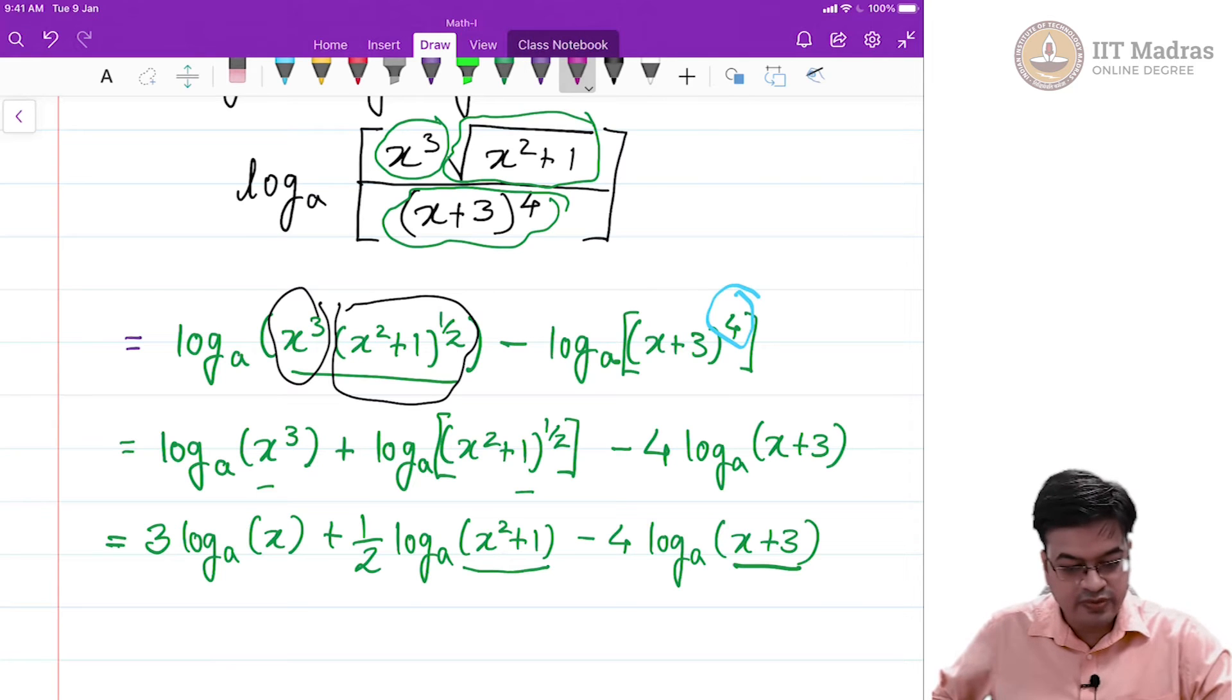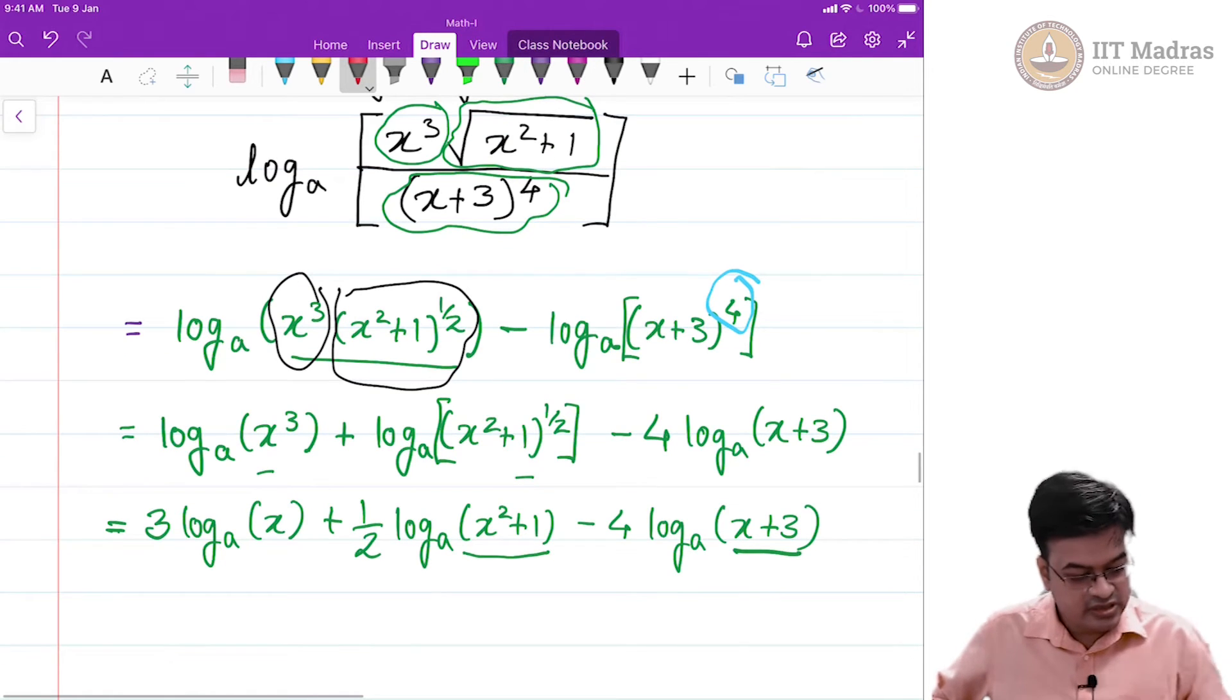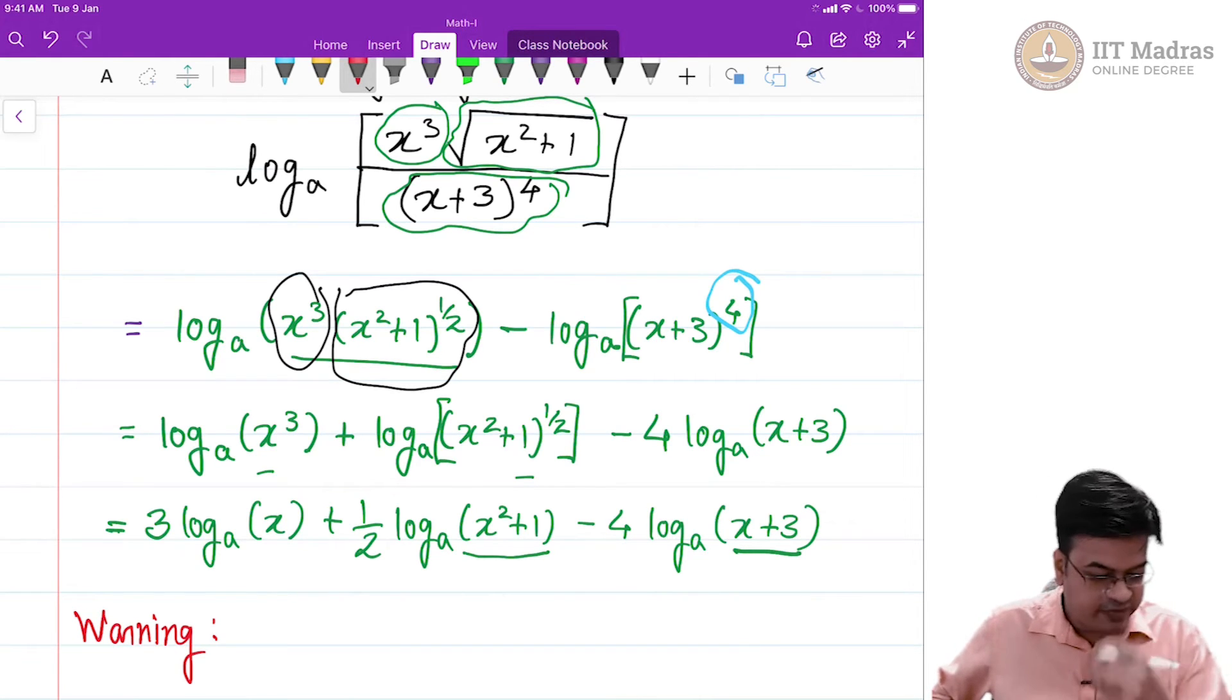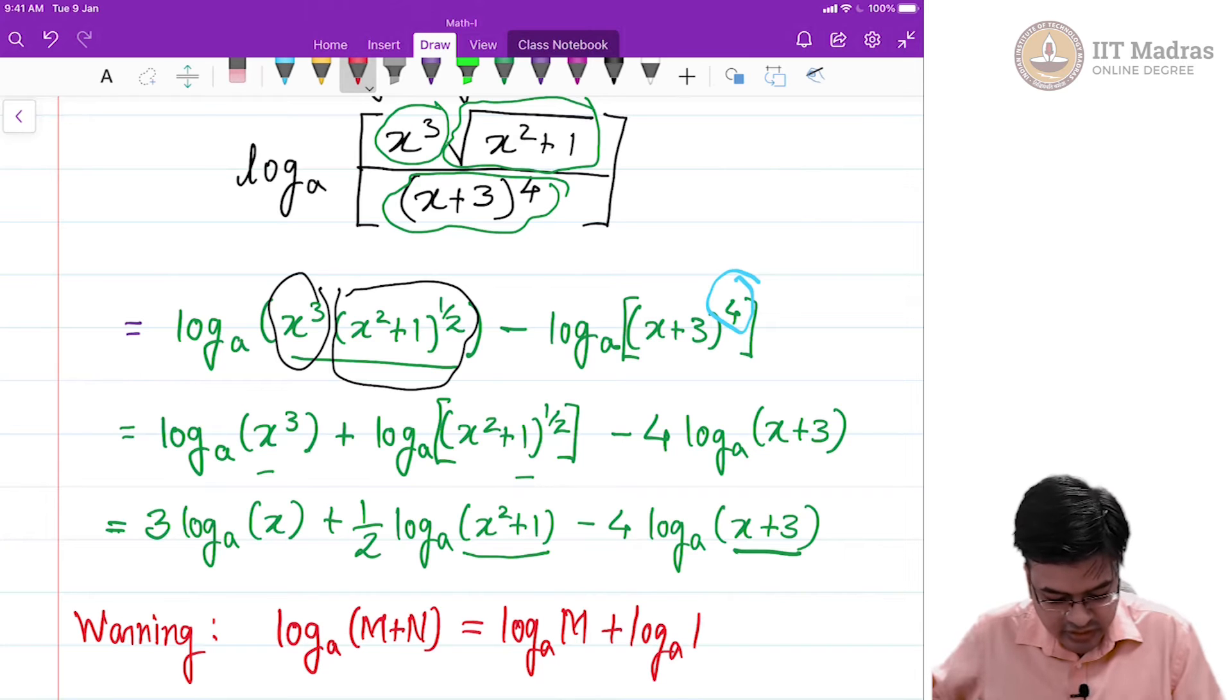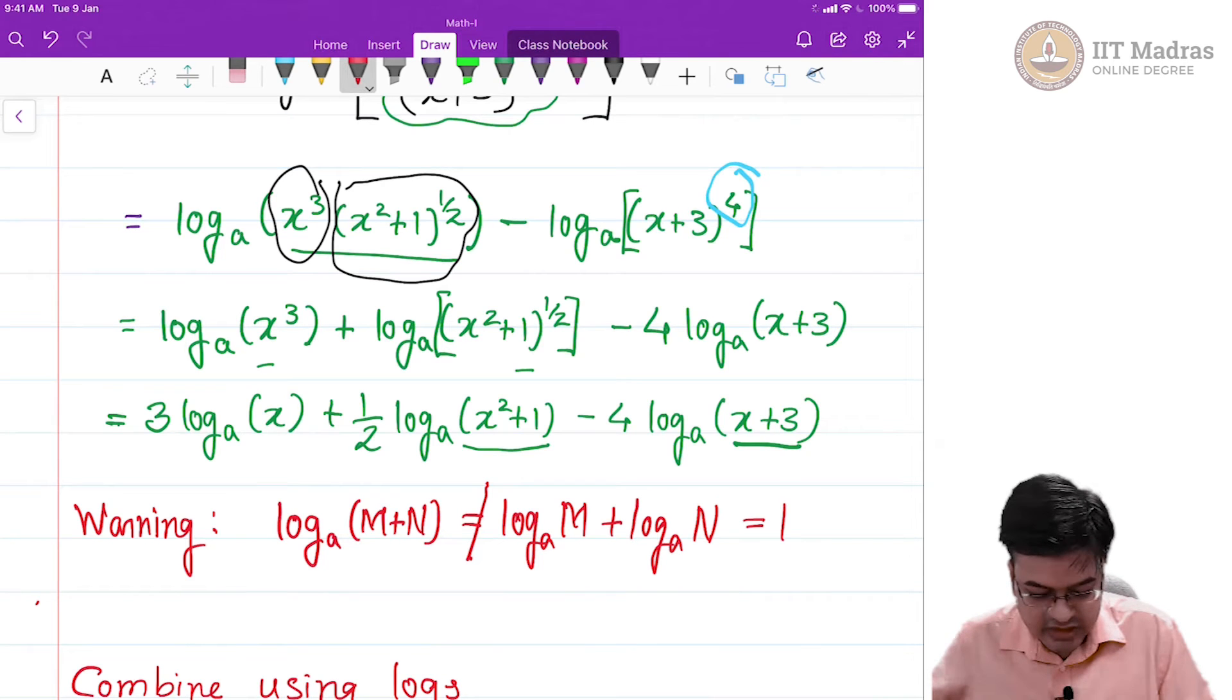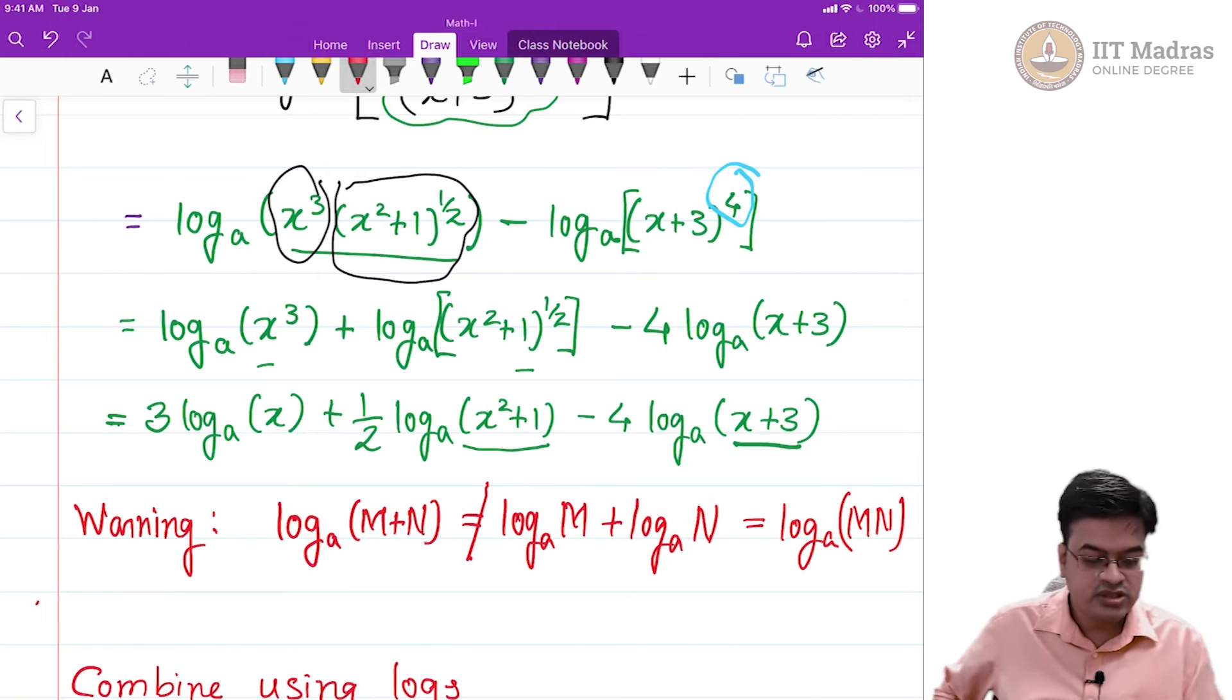Right now let me give you a note of caution or a warning. Generally it is, though it is obvious, but while doing the calculation people use this rule log to the base a of m plus n is log to the base a of m plus log to the base a of n. This is what people use and they try to solve the problem so that they think they will simplify. But remember this is not equal to that. Why? Because we have just now proved that this is nothing but log to the base a of m n. So these two things are different.